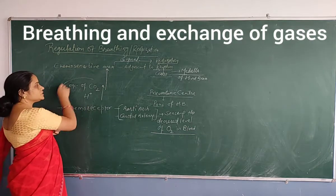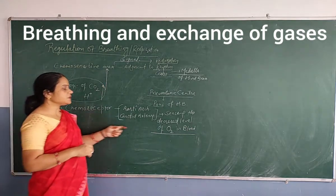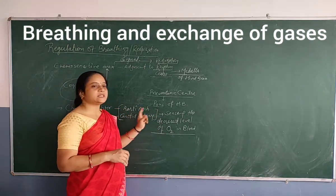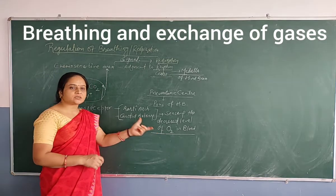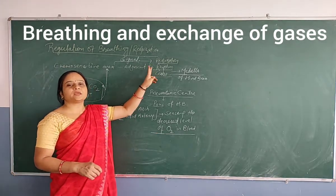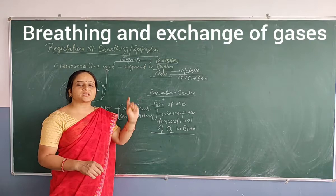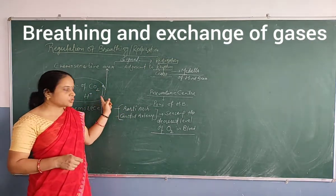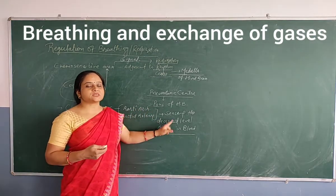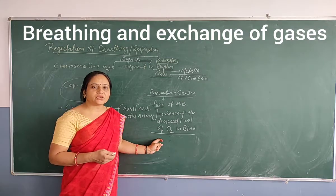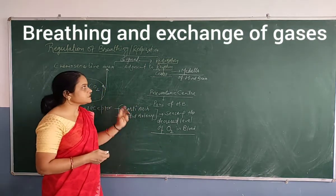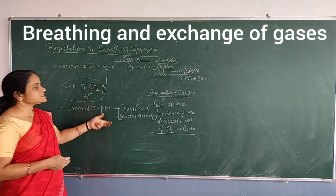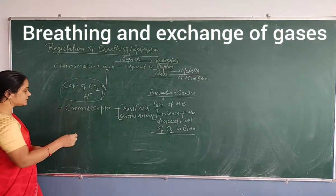They are sensitive to these situations and help in sensing when oxygen level in the blood decreases. They inform the rhythm centre to make the necessary adjustment to remove carbon dioxide to outside the body and to absorb oxygen from the environment in the form of inhaled air. These two types are the chemical factors affecting respiration.